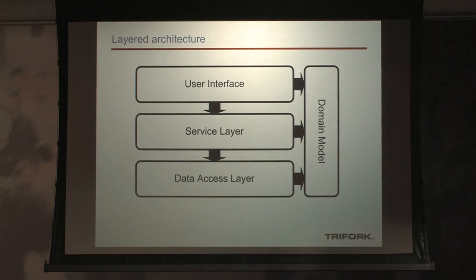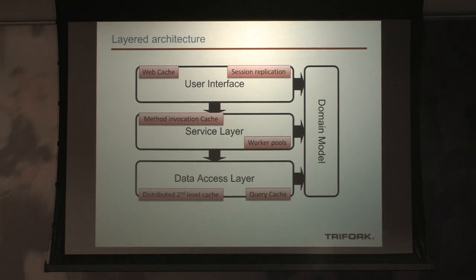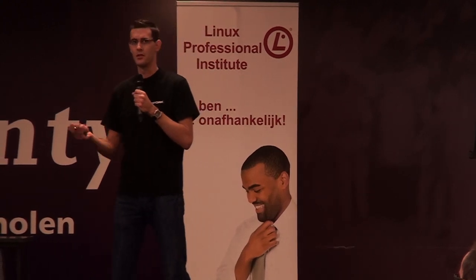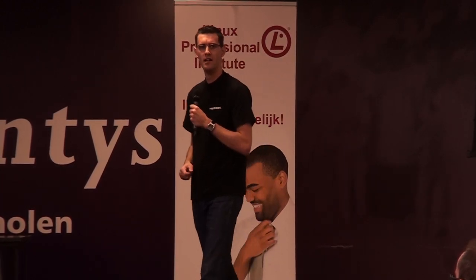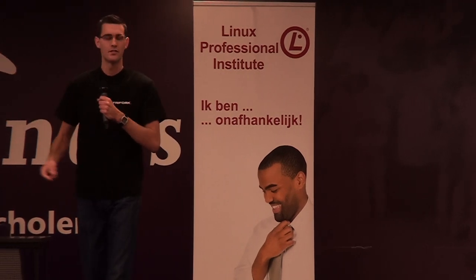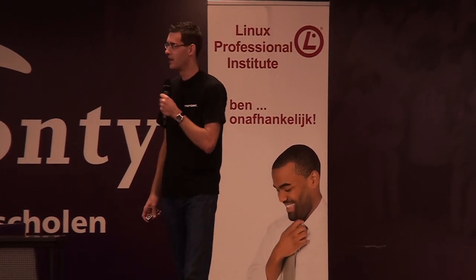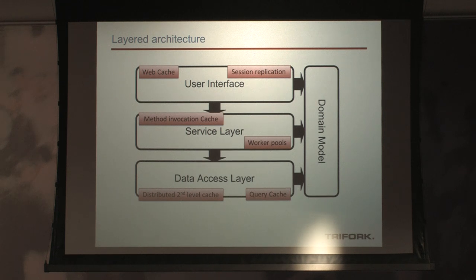An architecture like this doesn't scale very well, and in some cases it's hard to make it perform well. So what do we do? We add caches — we love technology. We put a web cache, proxy servers in between, session replication because we don't want sticky sessions on our load balancer, method invocation caches on the service layer. With a framework like Spring, all you need is an annotation on your method — cached, done.